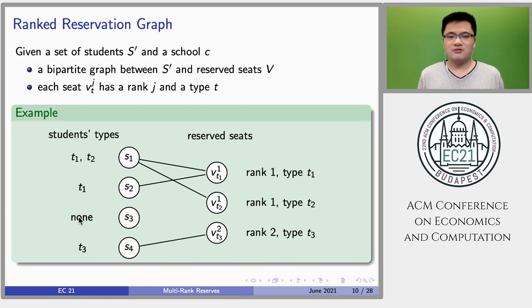Consider this example, there are four students and three reserved seats. Student s1 belongs to type T1 and T2. Reserved seat w with superscript 1 and subscript T1 has rank 1 and type T1. There is no edge incident to student s3 since he is not associated with any type.